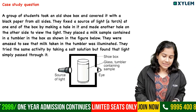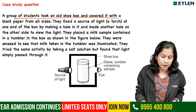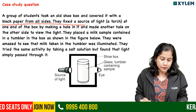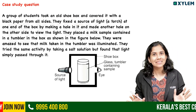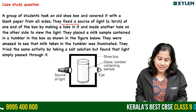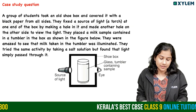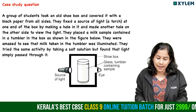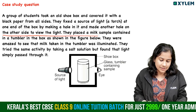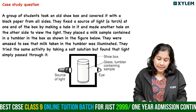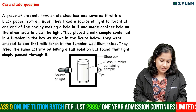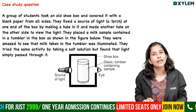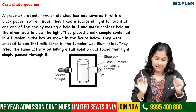A group of students took an old shoe box and covered it with black paper from all sides. They fixed a source of light - a torch - at one end of the box by making a hole in it, and made another hole on the other side to view the light. They placed a milk sample contained in a tumbler in the box, as shown in the figure.